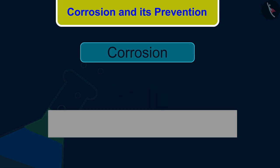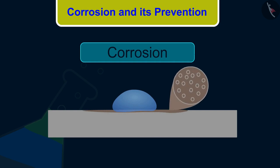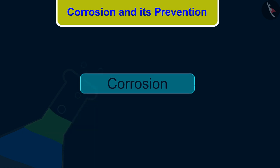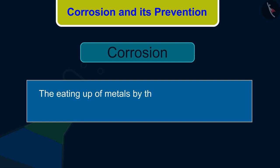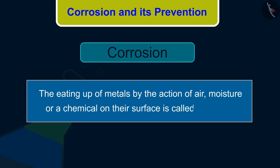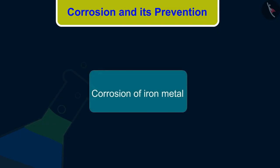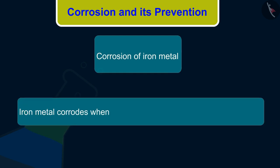In some metals like iron, these compounds are porous and gradually fall off from the surface, and then the metal underneath is also attacked by these factors. The eating up of metals by the action of air, moisture, or a chemical on their surface is called corrosion. Most of the metals corrode when kept in damp air.